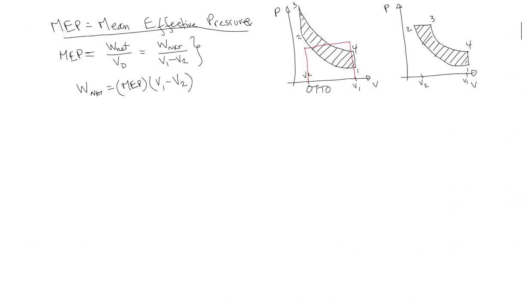The height of that rectangle is the MEP — shown here in red for both the Otto cycle and the diesel cycle. So the mean effective pressure is the pressure the process would have to operate under if all of the work were done as a single constant-pressure expansion from v2 to v1. In other words, we take the enclosed area of the cycle and model it into a rectangle whose length is v1 minus v2 and whose height is the MEP.